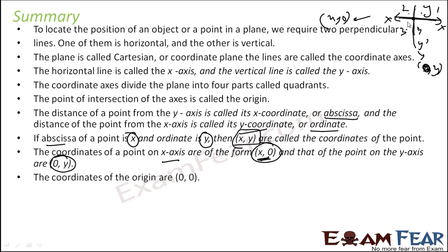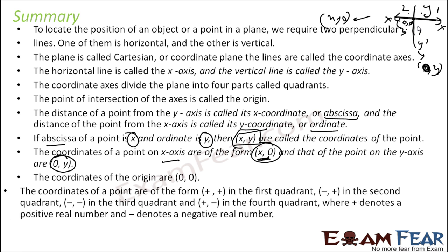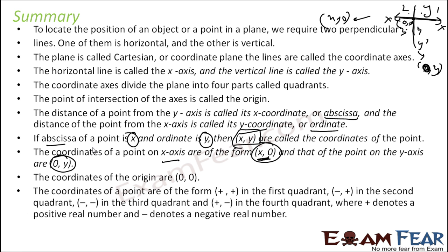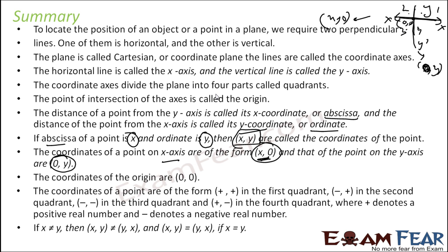In the first quadrant, both x and y are positive. In the second quadrant, x is negative and y is positive. In the third quadrant, both x and y are negative. In the fourth quadrant, x is positive and y is negative. Also please note: if x and y are not equal, then (x, y) is not equal to (y, x). For example, 2 comma 3 is not equal to 3 comma 2. But 2 comma 2 is equal to 2 comma 2, where x equals y.